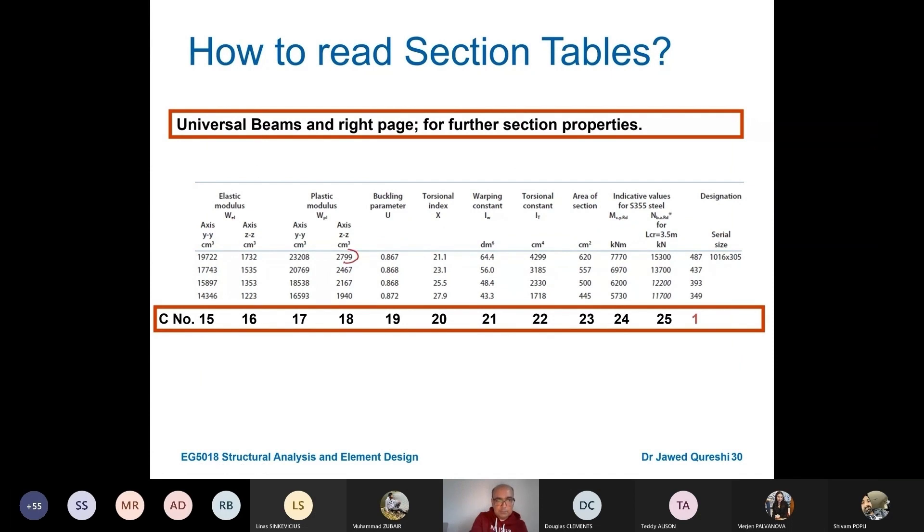We have this plastic section modulus. The one I referred to when I was telling you ultimate limit state is that moment capacity is equal to WPL times FY. The axial capacity tensile or compressive is equal to A times FY. But the moment capacity, I will have to multiply this plastic modulus. That's where we will need that.